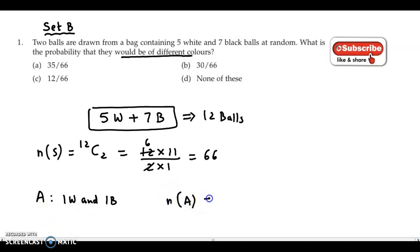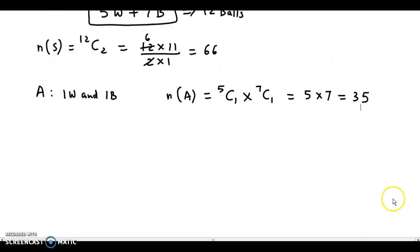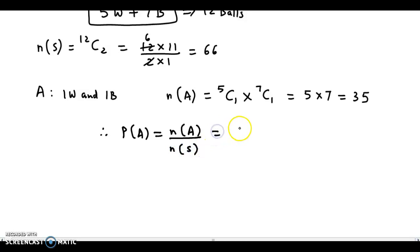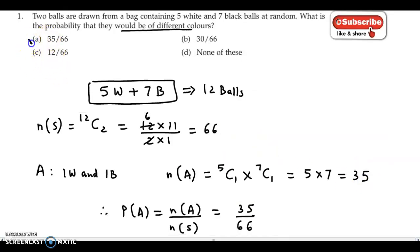So n of A would be 5C1 — that means 1 white ball selected — multiplied by 7C1 — that means 1 black ball selected. Now 5C1 is 5 and 7C1 is 7, so this product is 35. So the required probability P of A is equal to n of A upon n of S, which is 35 upon 66. So this is the correct answer — it is option A.